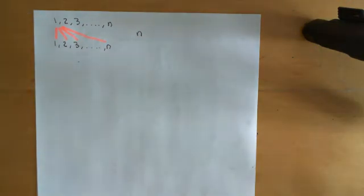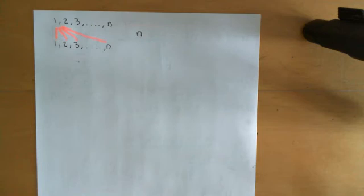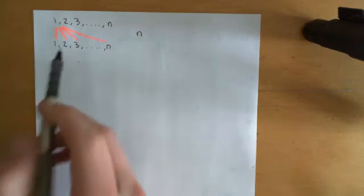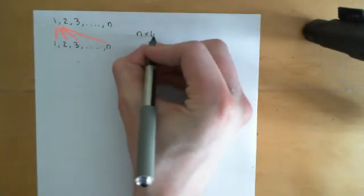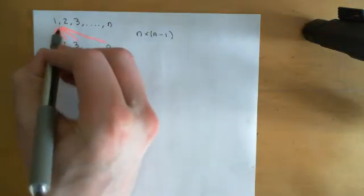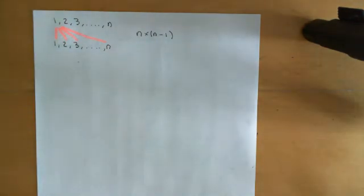So let's say we've now set where we're going to send number 1 — that's fixed. Now let's move on to number 2. How many different places can we send number 2? We've decided where we sent number 1, so now it's n minus 1, because one of these is already used up — the one that we mapped 1 onto. So there are now n minus 1 possibilities for where you send number 2.